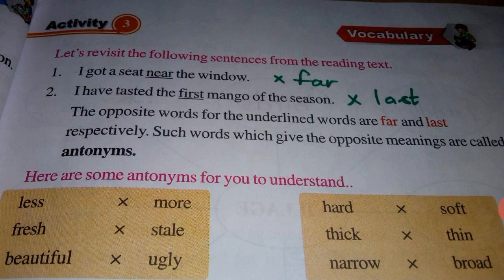The opposite words 'far' and 'last' are called antonyms — words that give the opposite meaning. So the antonym of near is far, and the antonym of first is last. Don't be confused: antonym is nothing but the opposite word. Let's see antonyms for different words: less/more, fresh/stale, beautiful/ugly, hard/soft, thick/thin, narrow/broad. If you get a question asking for antonyms, just write the opposite word of the given word.